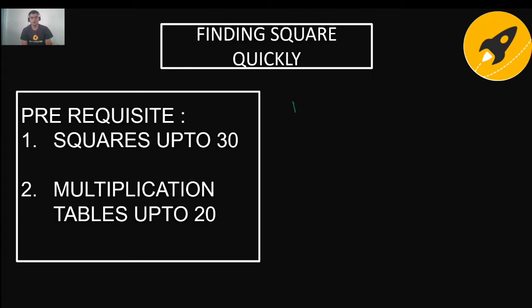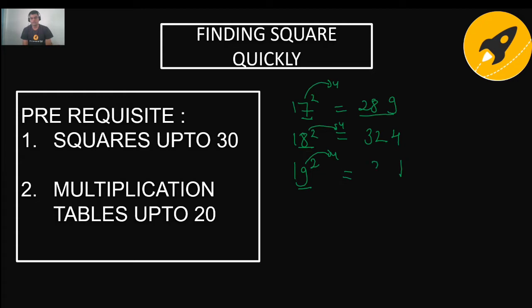There is a trick for remembering 17², 18², and 19². The number ending with 7 has a square ending with 9; multiply 7 × 4 = 28, so 17² = 289. The number ending with 8 has a square ending with 4; 8 × 4 = 32, giving 18² = 324. For 19², the square ends with 1; 9 × 4 = 36, giving 19² = 361.